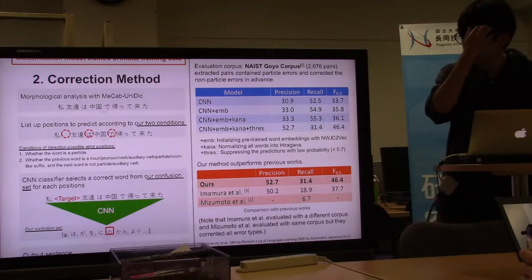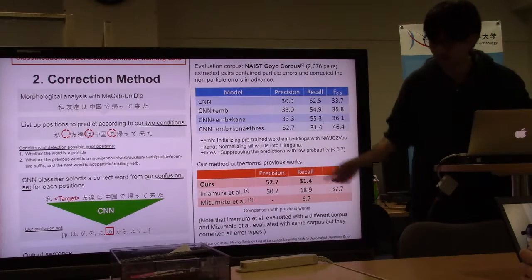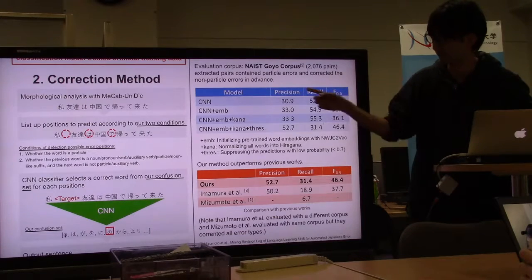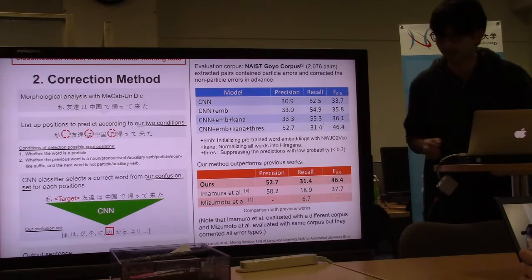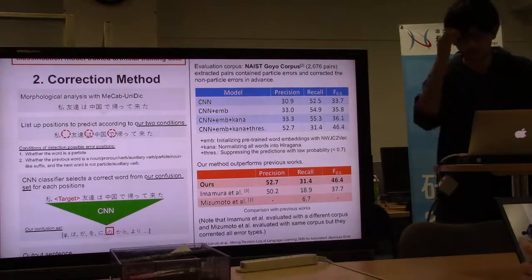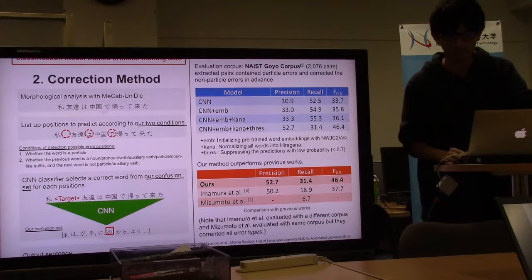We can control the trade-off between precision and recall by adjusting threshold of prediction probability.